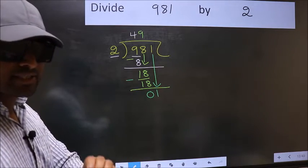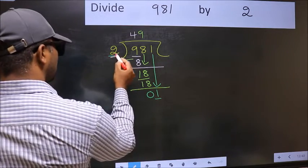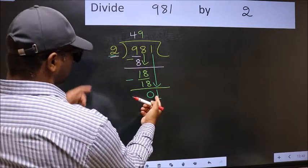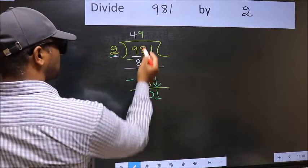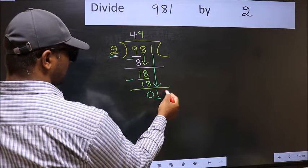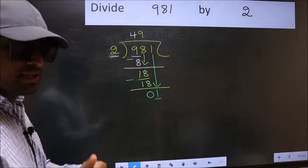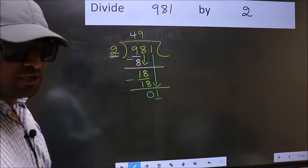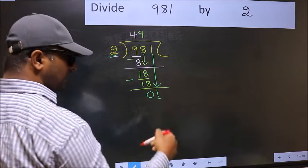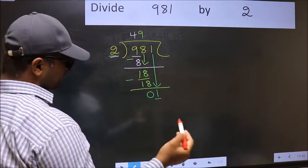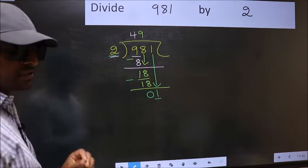So the mistake is this. Here we have 1 and here 2. 1 is smaller than 2. So what many do is they directly put a dot and take 0 which is wrong. Why is it wrong? Because just now you brought this number down and in the same step, you want to put a dot and take 0 which is wrong.